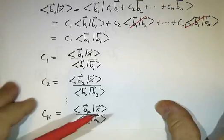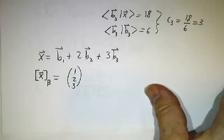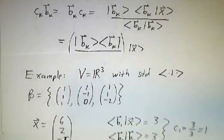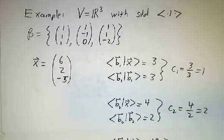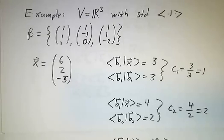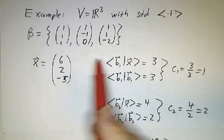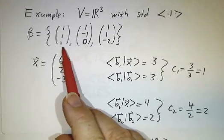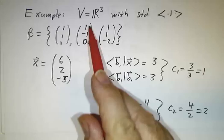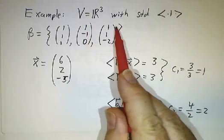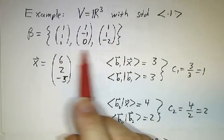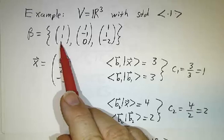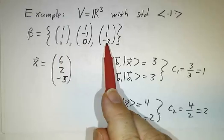For example, let's suppose we're in R3 with the standard inner product, and we're going to use the basis: b1 = (1, 1, 1), b2 = (1, 1, -1, 0), and b3 = (1, 1, -2). This is going to be a running example, and you can readily check that these vectors are orthogonal.